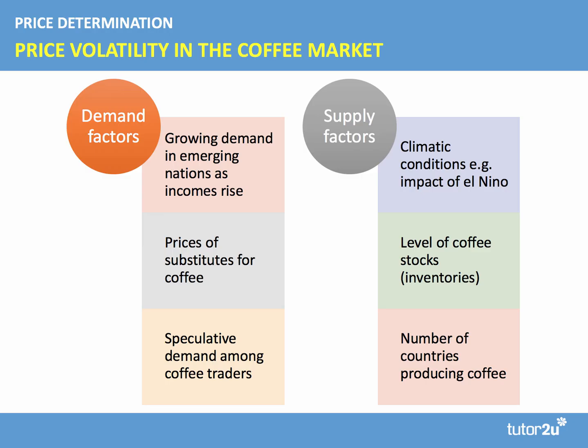On the supply side, world coffee production in 2018 is estimated at around 160 million bags — approximately three million bags per week — up about one percent over the previous year. Supply shocks clearly affect the coffee market: climatic conditions impact current production levels, and weather events such as El Niño are a key factor. The level of coffee stocks held in storage, otherwise known as inventories, also affects market supply.